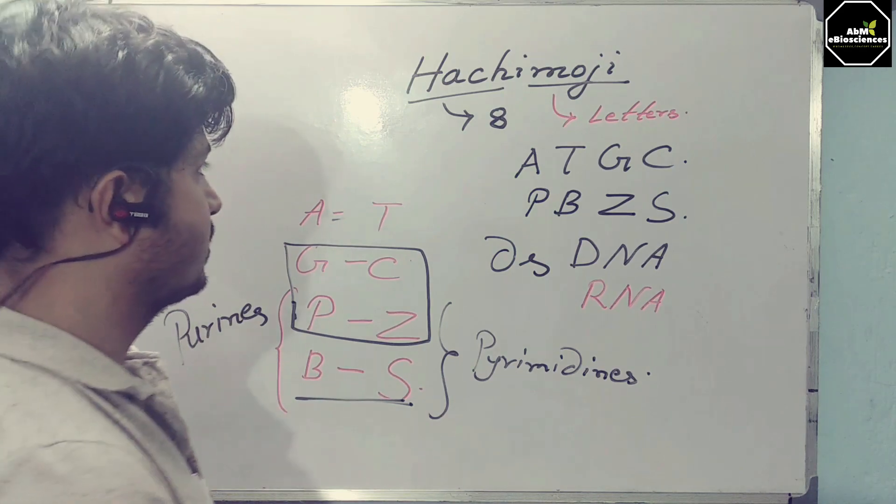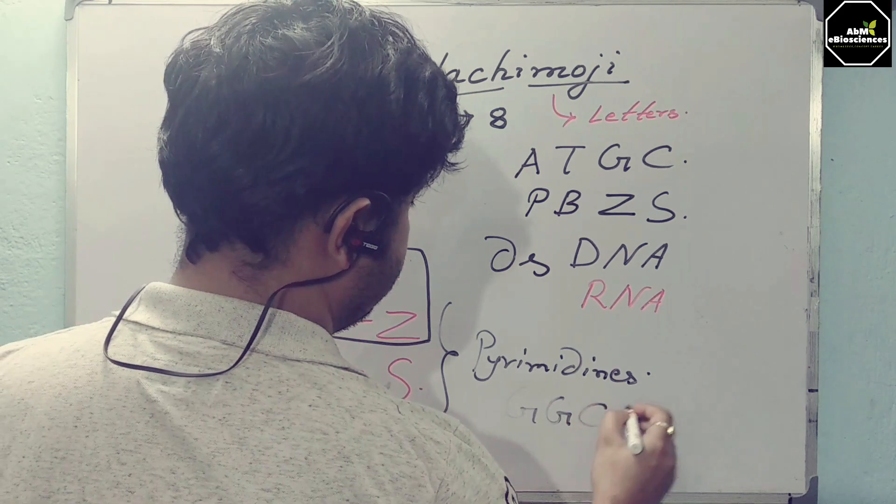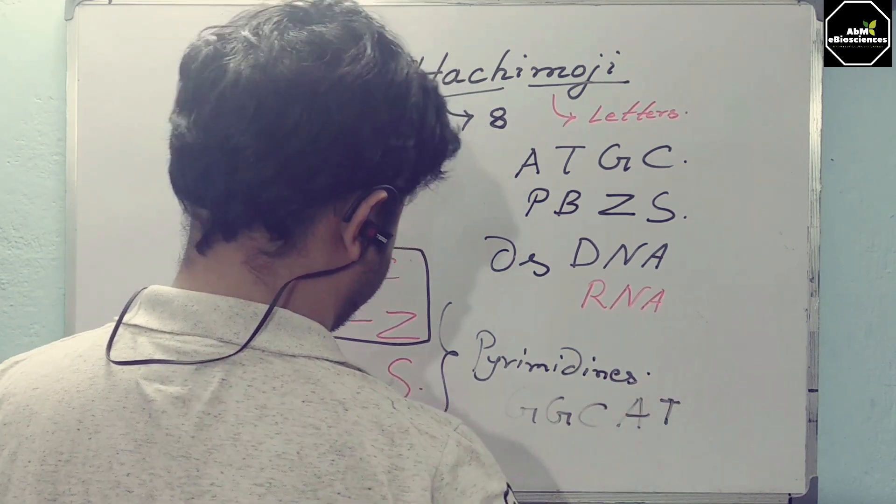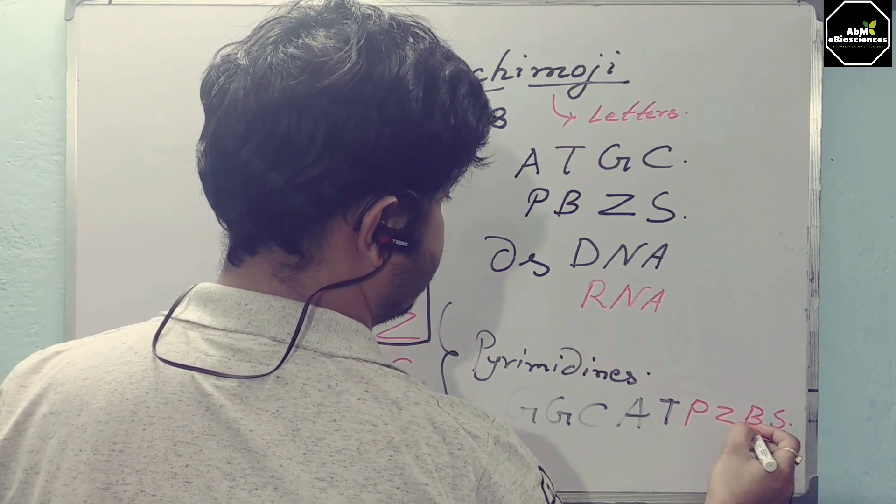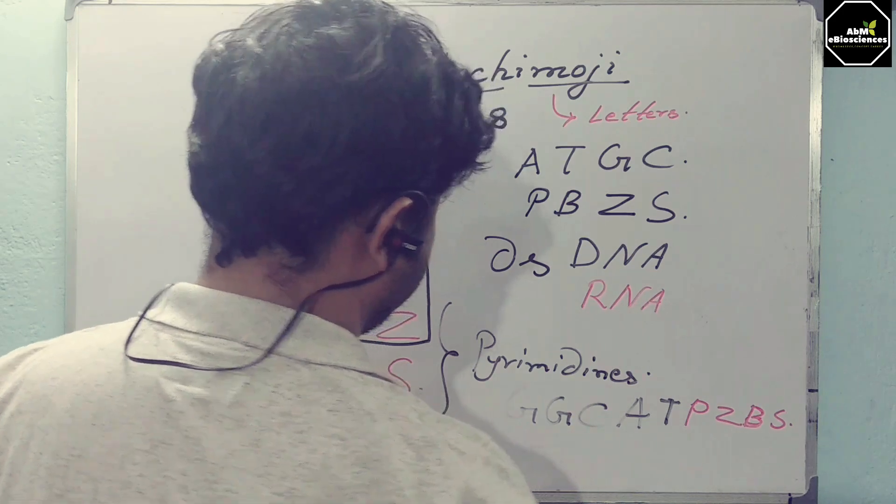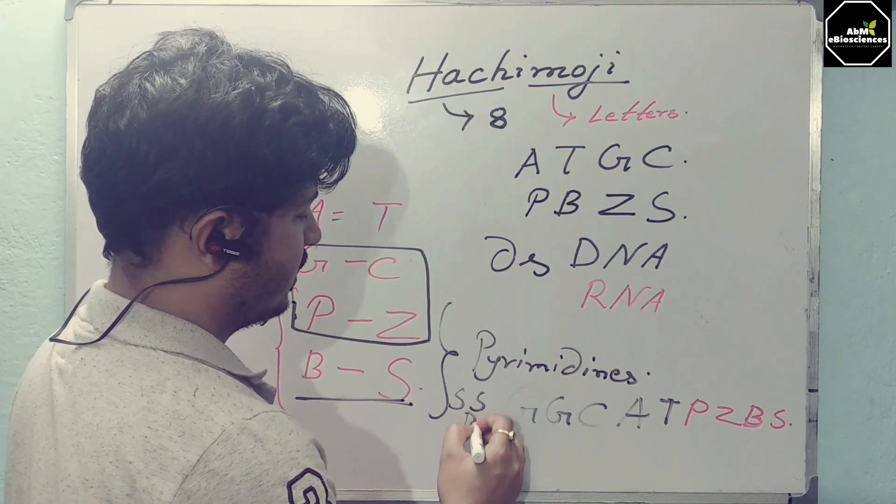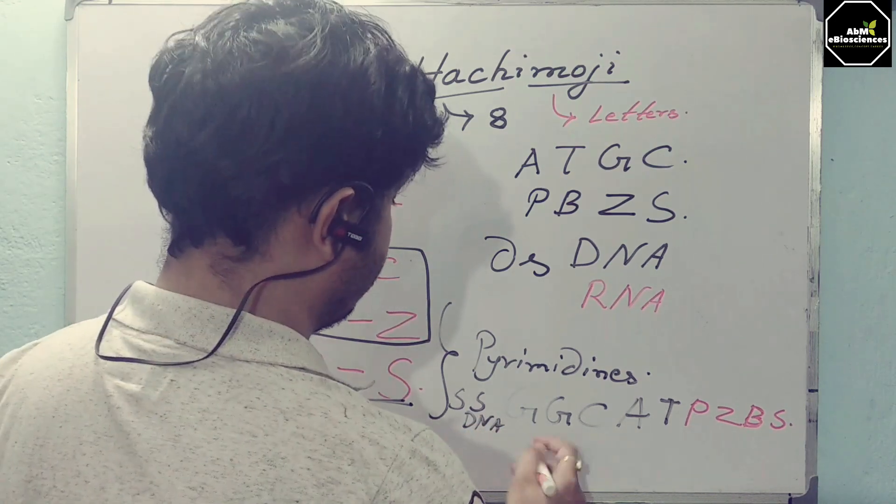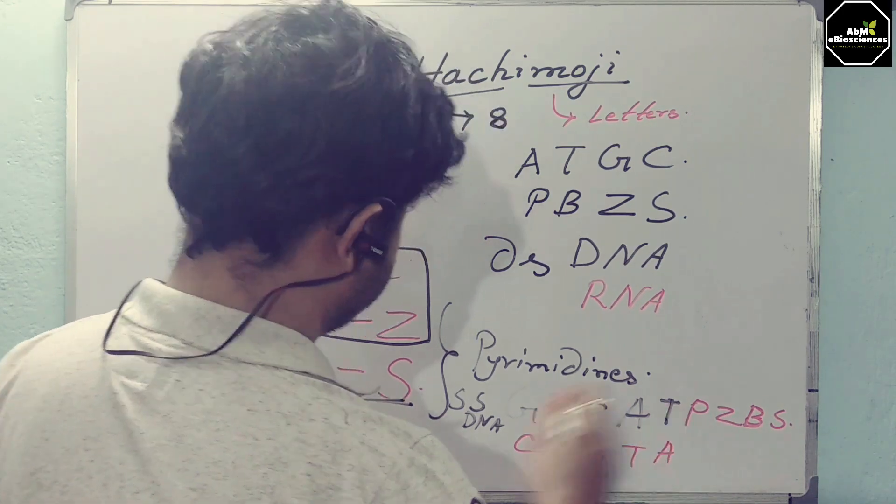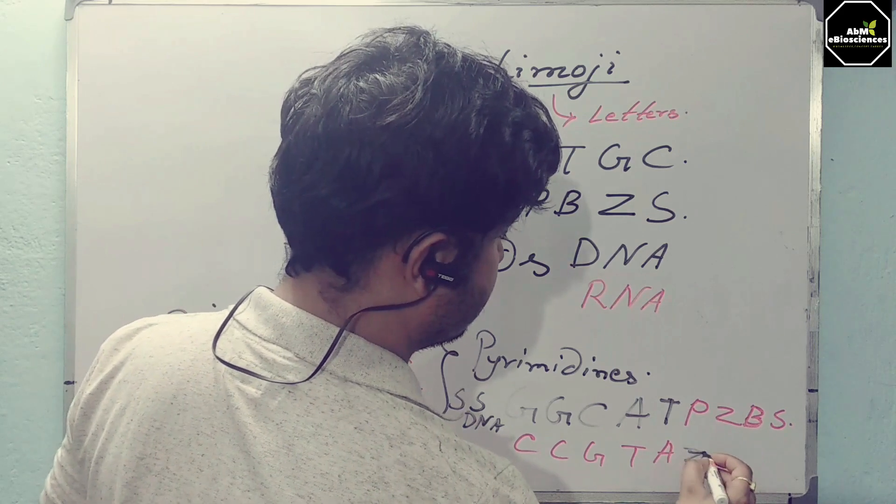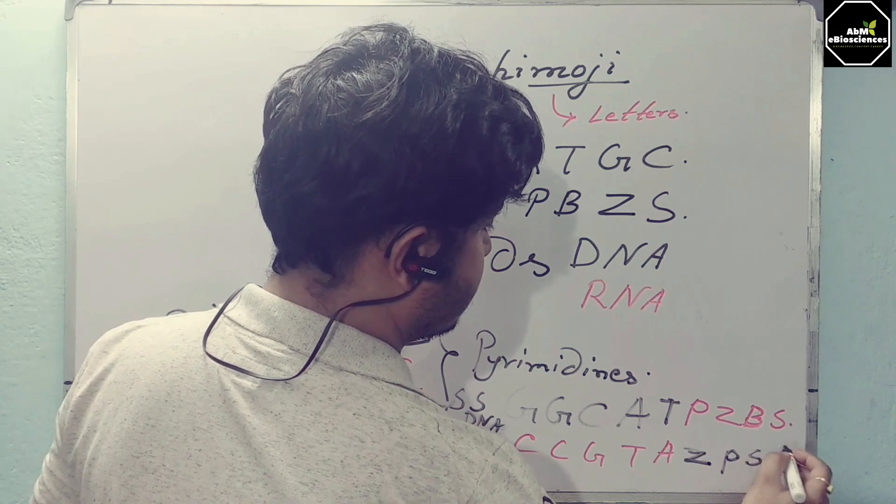Now suppose you write a sequence here: G, G, C, A, T, P, Z, B, S. This is the single strand form, single strand DNA form. What will be the complementary strand? The complementary will be C, G, T, A. Similarly, here we will be saying Z, P, Z for B, S for S, Z for B.